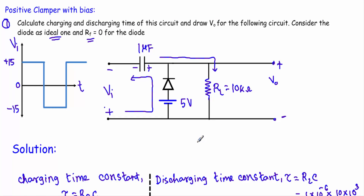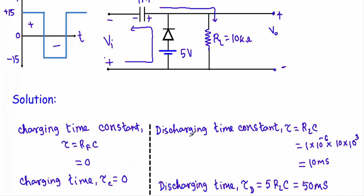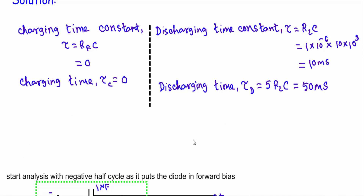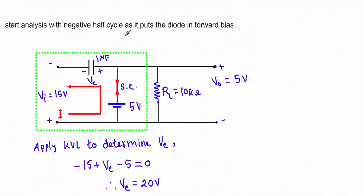Now I will apply the five steps I showed you in my previous lecture. First, I have to start my analysis with the half cycle of the alternating voltage which puts the diode in forward bias. We have a positive and a negative half cycle. When the input voltage is at the negative half cycle, this terminal will be positive and this terminal will be negative, which will drive the diode into forward bias. So I will start my analysis with the negative half cycle.